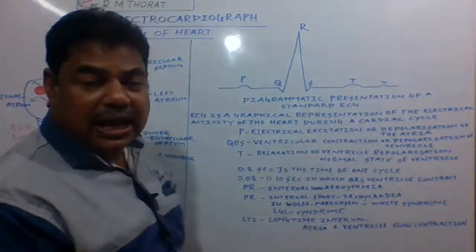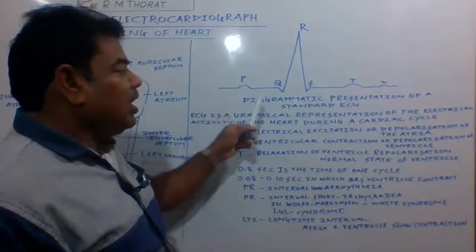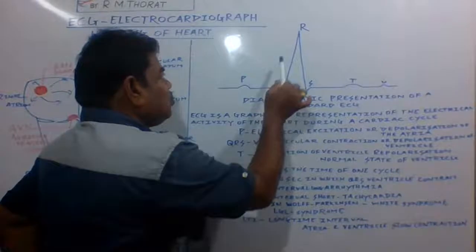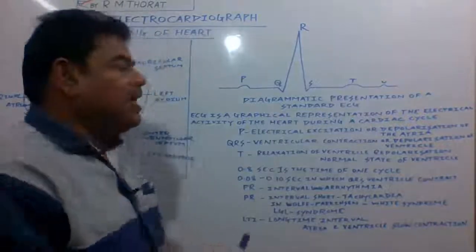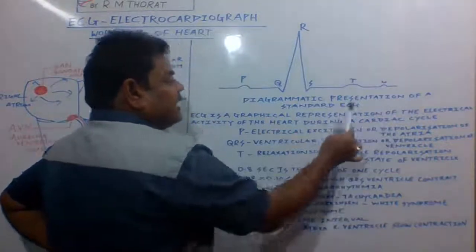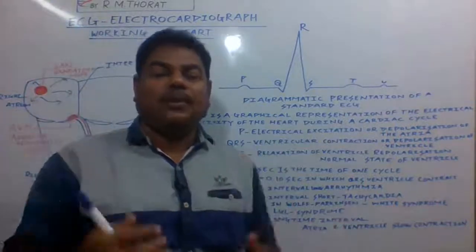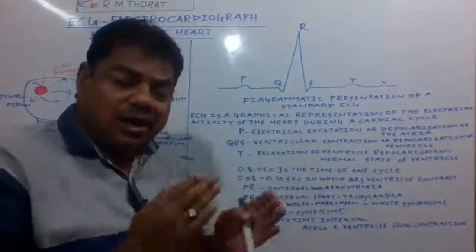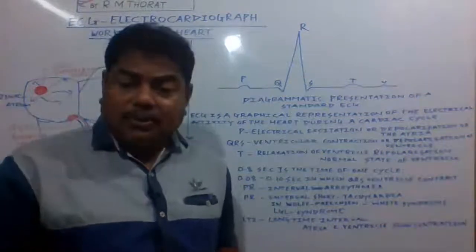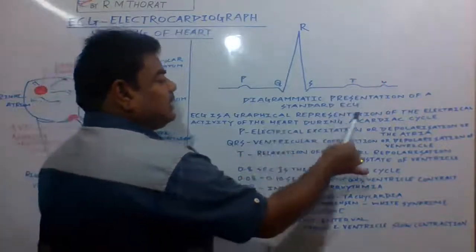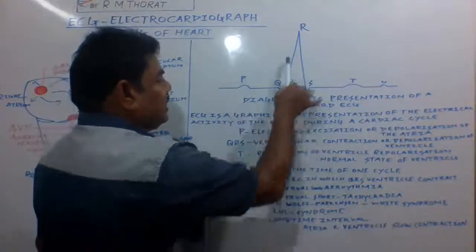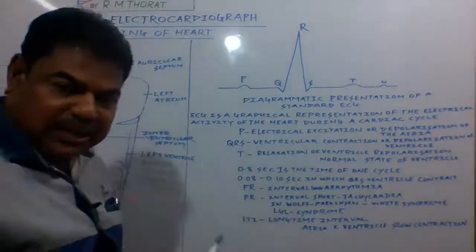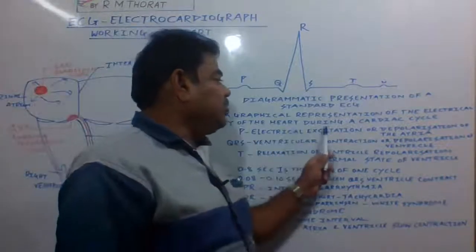This normal ECG is what appears for a healthy body. The graph is read using the letters P, Q, R, S, and T. This graph is a diagrammatic representation of a standard ECG — your normal ECG. If there are variations from this normal ECG, it means there is a problem in the heart. ECG is a graphical representation of the electrical activity of the heart — the electrical impulses emitted by the node and their activity during the cardiac cycle.